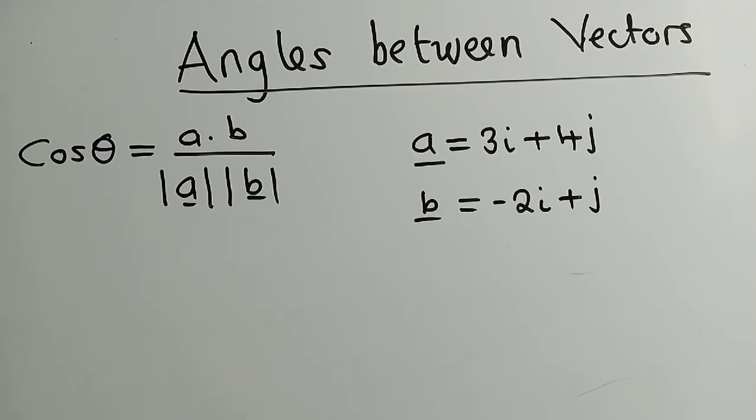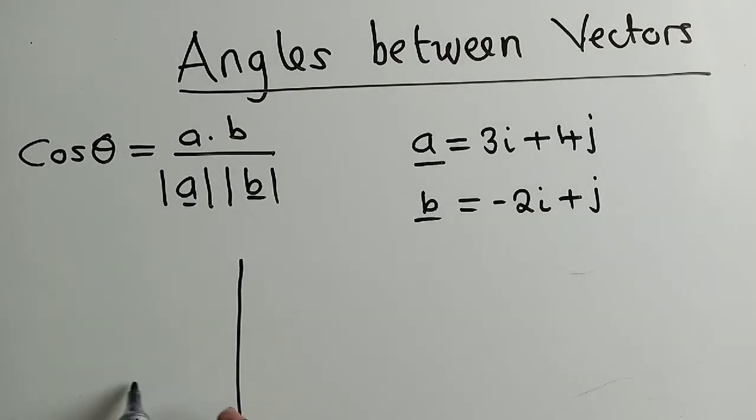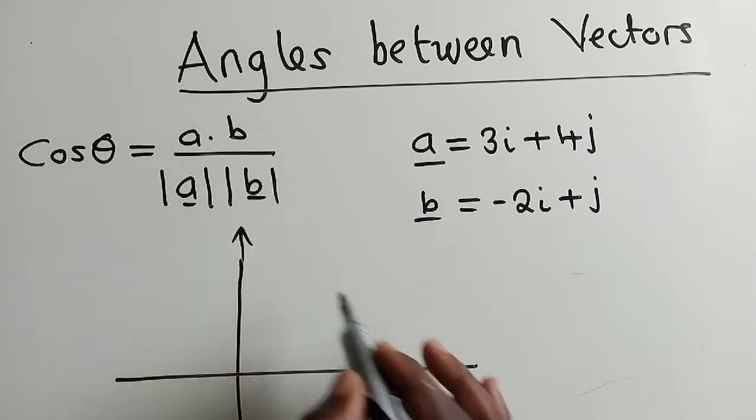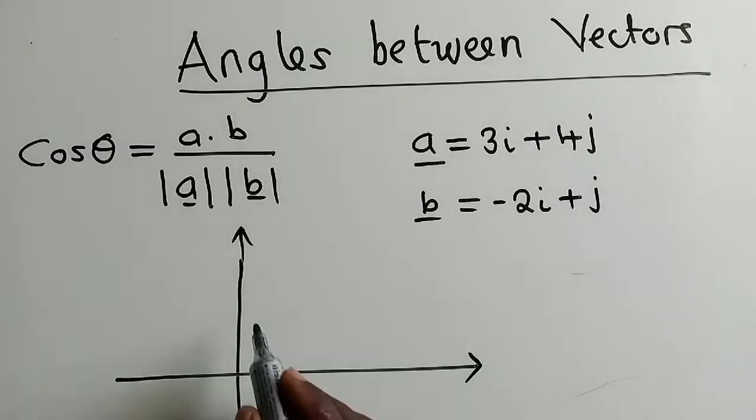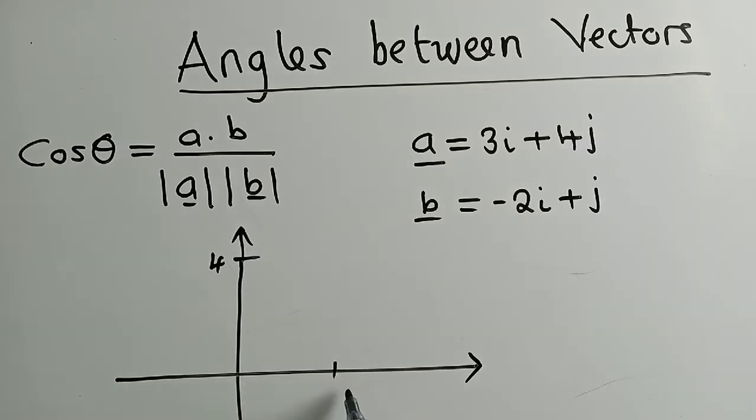So, how do you find the angle between them? Let me try to graph. Let's say this is the y-axis and x-axis, and this is where 4 is, this is where 3 is, negative 2 is right here, and 1 is here.